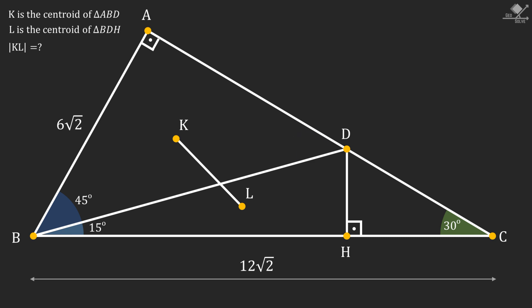It can be seen that angle ADB is 45 degrees. Since triangle ABD is an isosceles triangle, sides corresponding to equal base angle should be equal, and line segment AD will also be 6 times square root of 2 units.